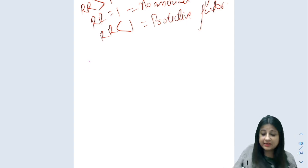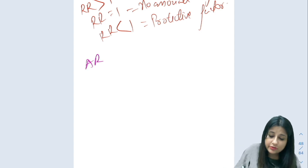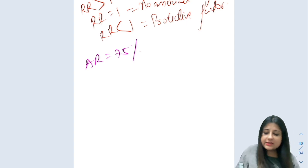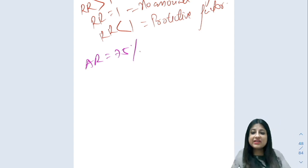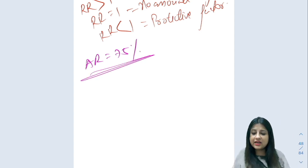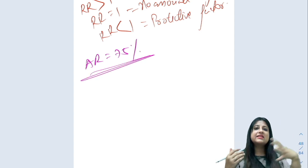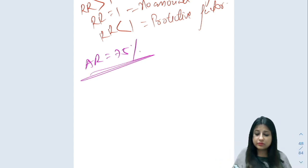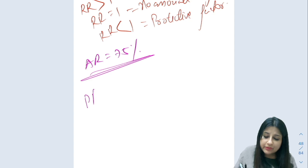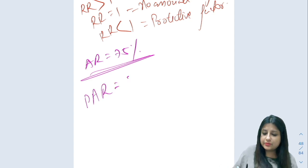Attributable risk — suppose we are studying smoking and lung cancer and it comes out to be 75%. It means 75% of lung cancer cases are attributed to smoking. Now if population attributable risk comes out to be 90%, that has a different interpretation.